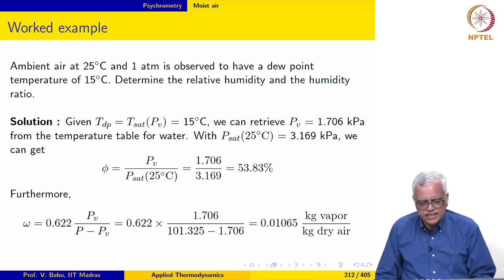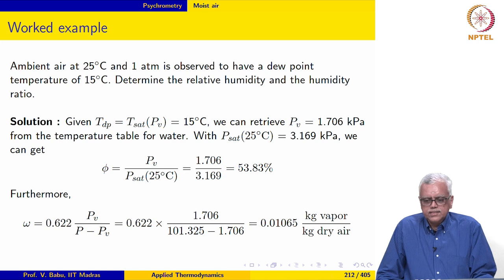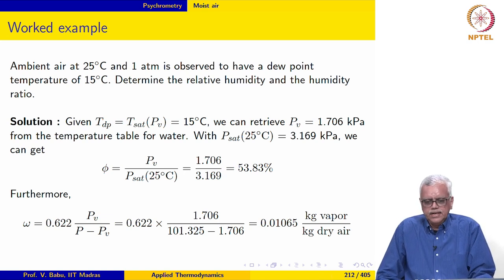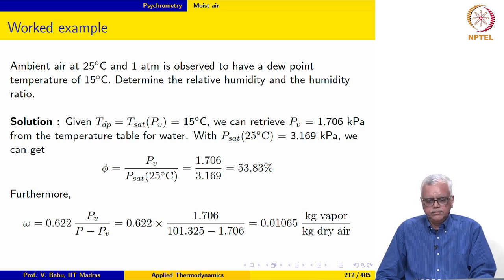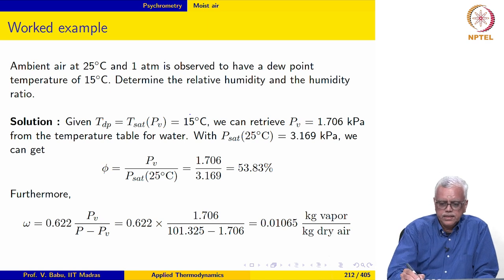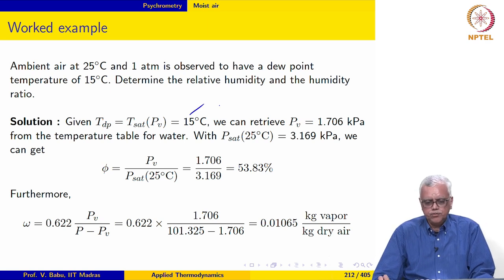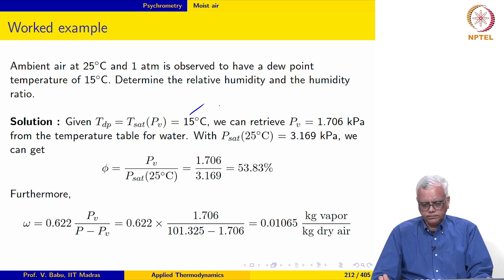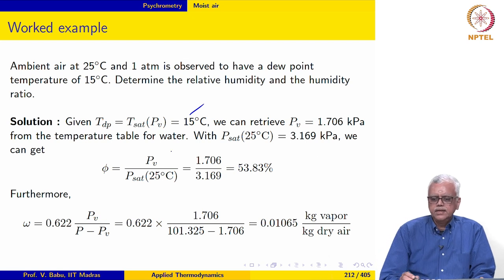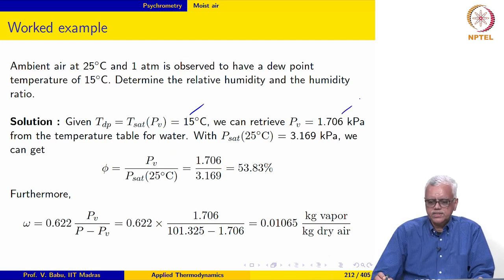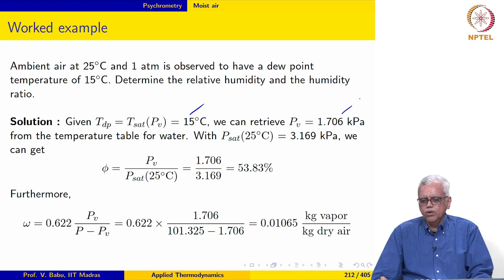Ambient air at 25 degree Celsius and 1 atmosphere is observed to have a dew point temperature of 15 degree Celsius. Determine the relative humidity and the humidity ratio. We are given that the dew point temperature T_sat of PV is 15 degree Celsius, so we go to the steam table temperature table and retrieve PV to be 1.706 kilopascal.